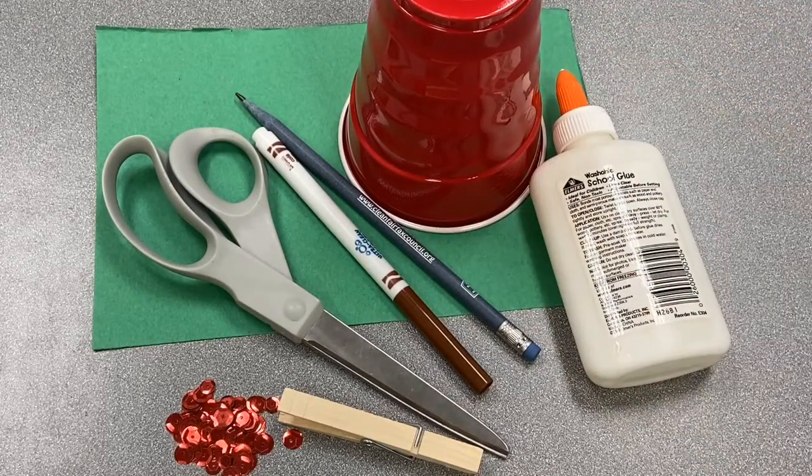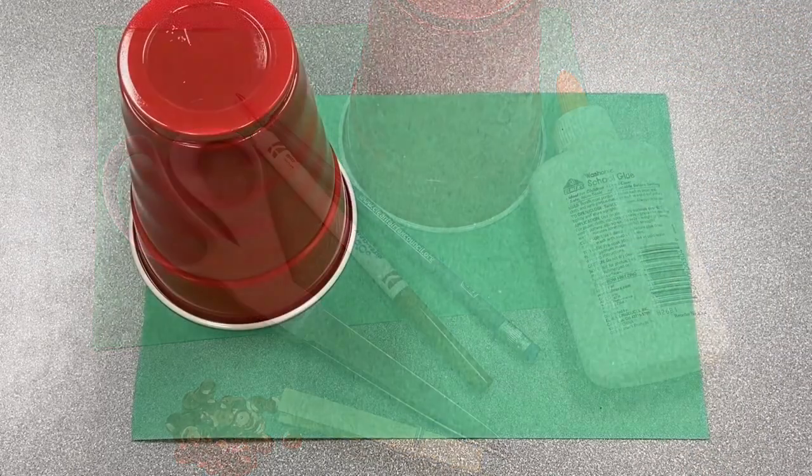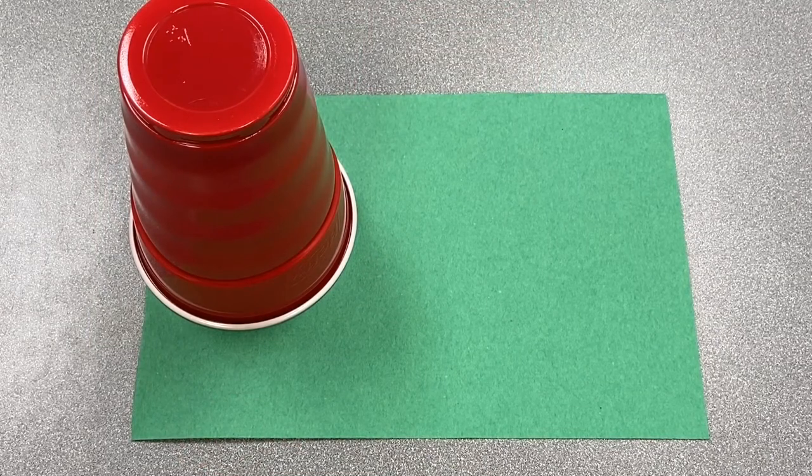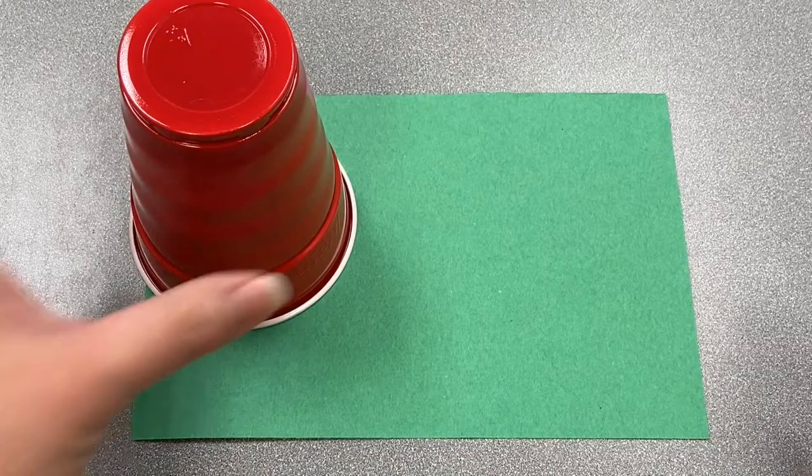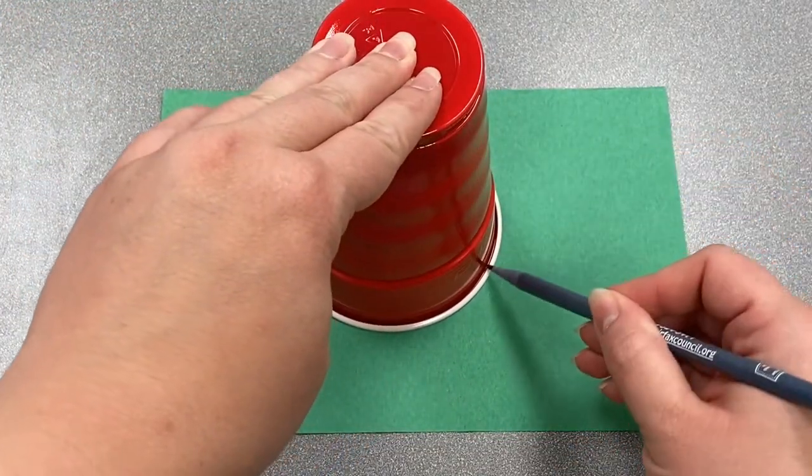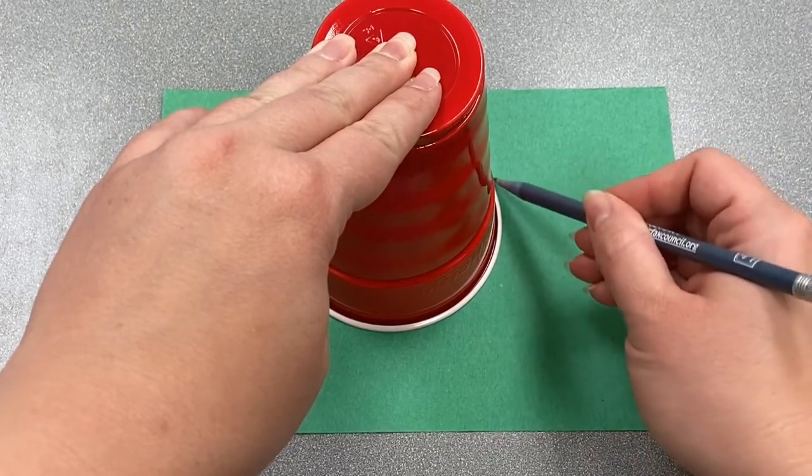You'll also need a cup for tracing. That's all you need. Let's get started. First we're going to trace the circle on our green construction paper by using the cup and the pencil. Put our cup right here and bring our circle around.